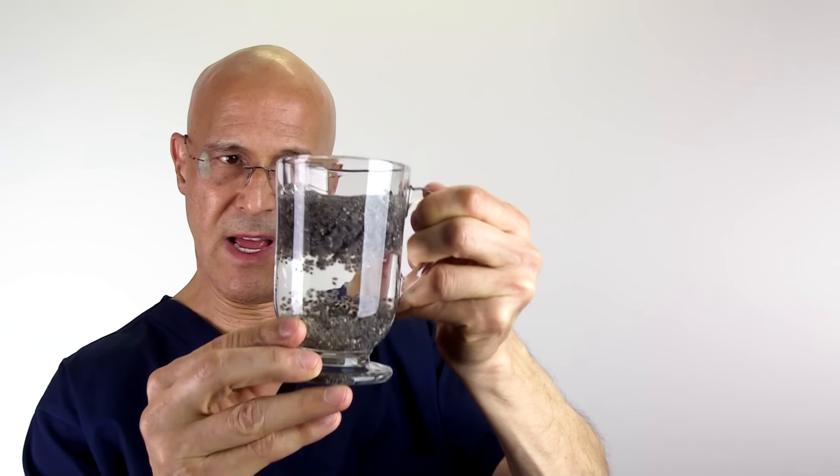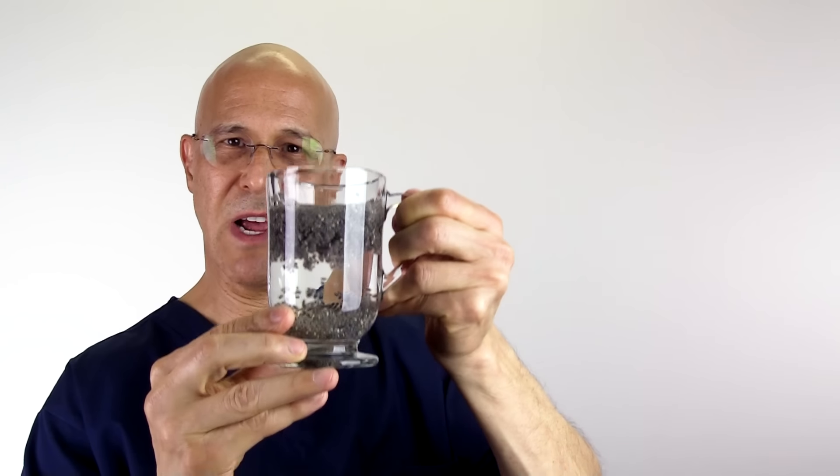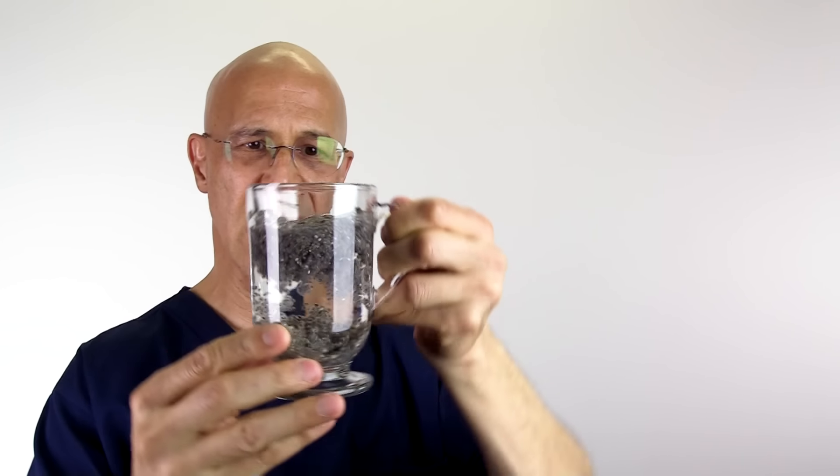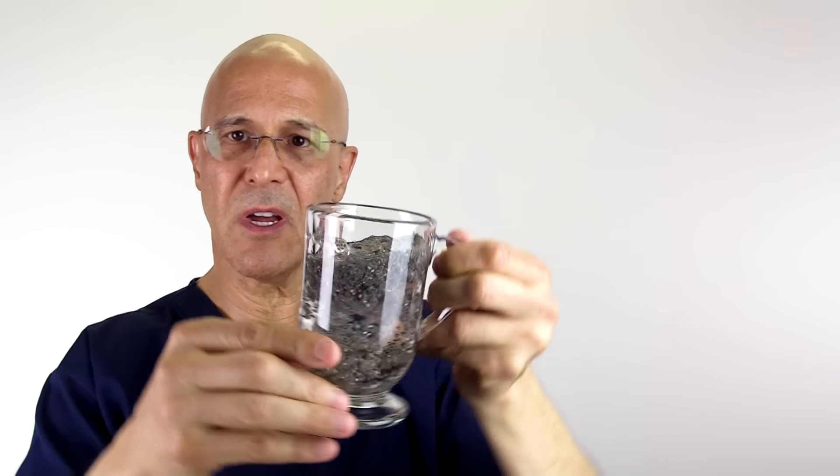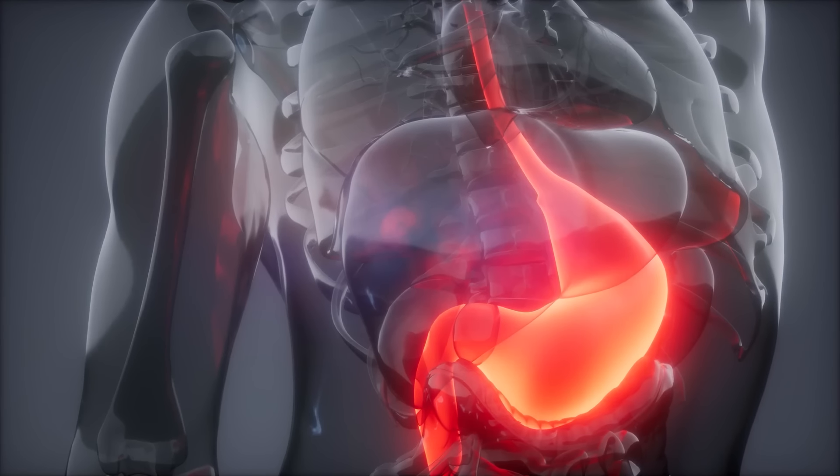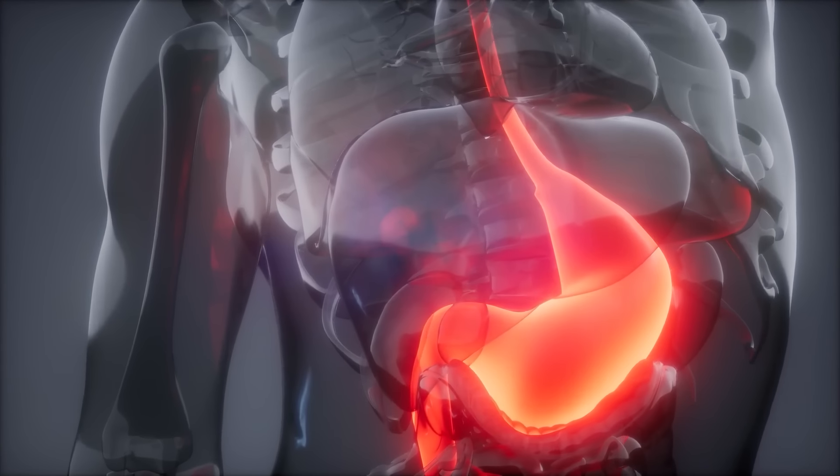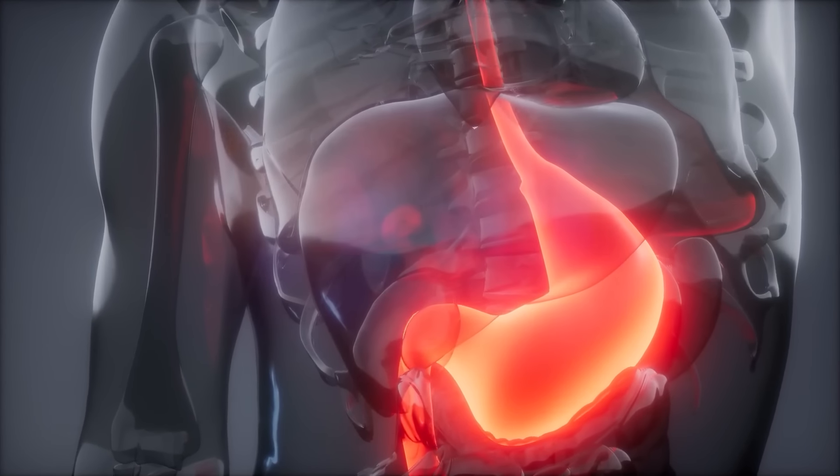And so let's look at the chia seed now, just a few minutes later than when I showed you. Look how thick it is. It's not even dripping out. Pretty amazing. And remember that your stomach is about the size of your fist, and it can definitely swell many, many times larger.